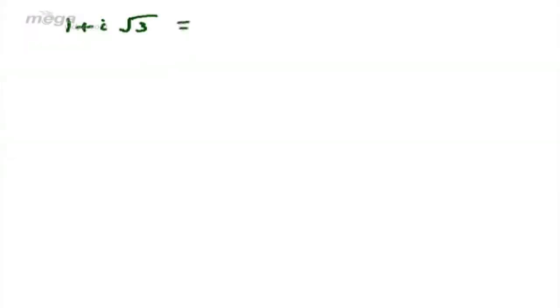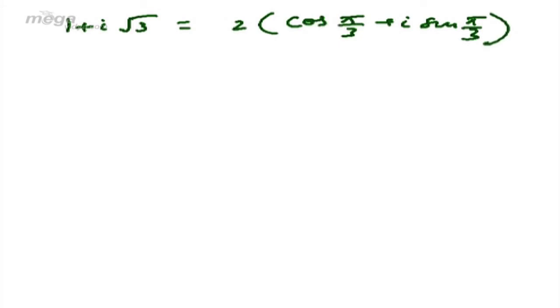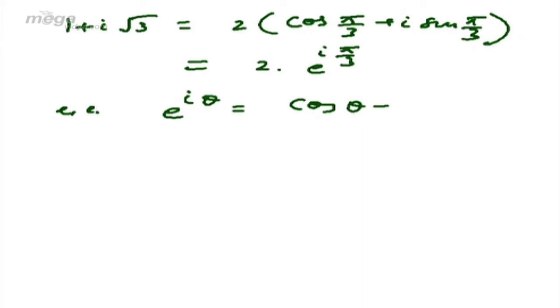From these three equations, theta equals pi by 3. So 1 plus i root 3 can be written as 2 into (cos pi by 3 plus i sine pi by 3), and this can also be written as 2 into e to the power i pi by 3. This uses the identity that e to the power i theta equals cos theta plus i sine theta.